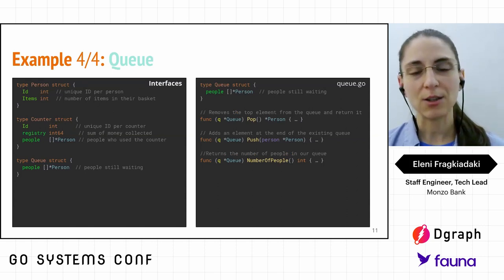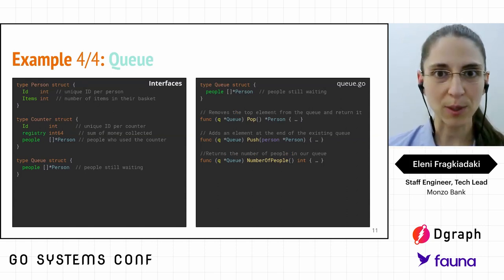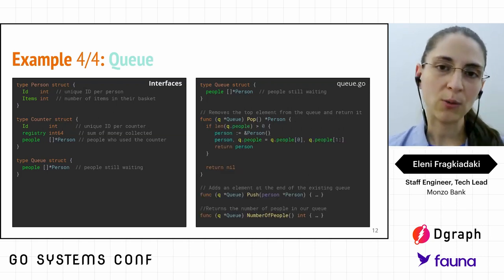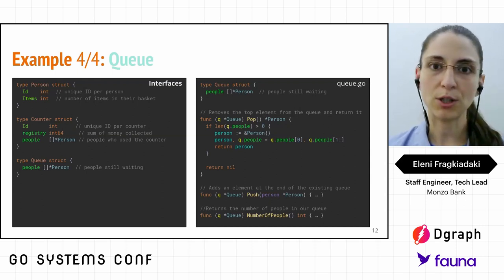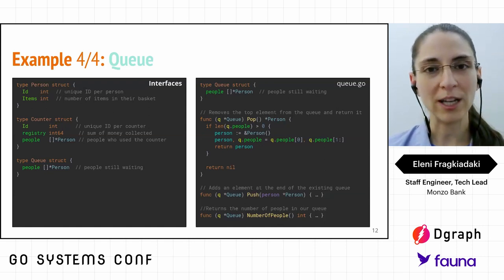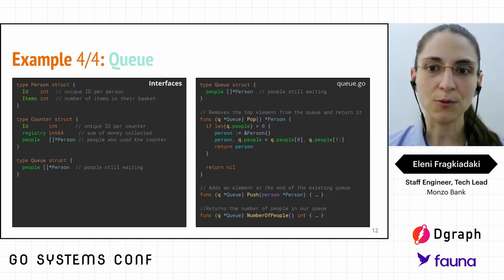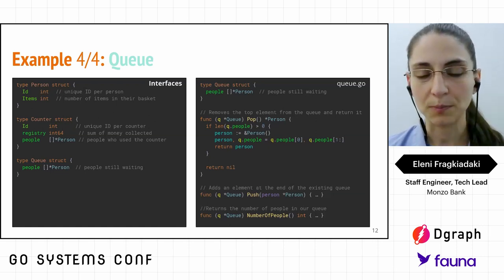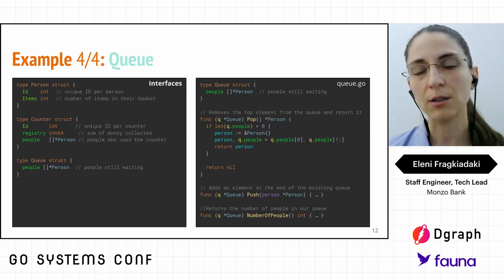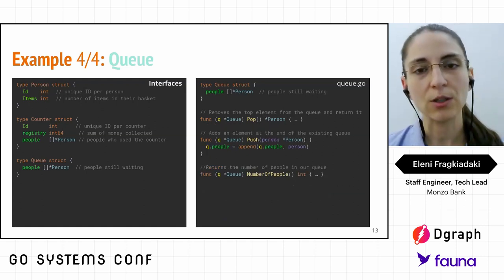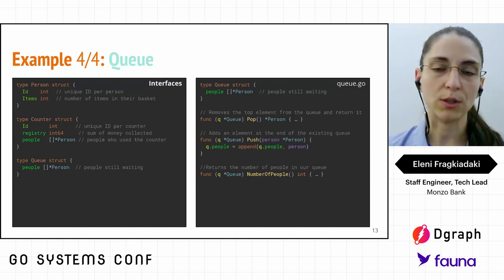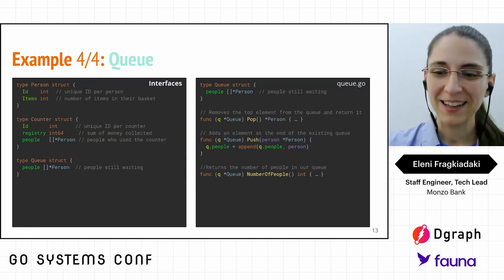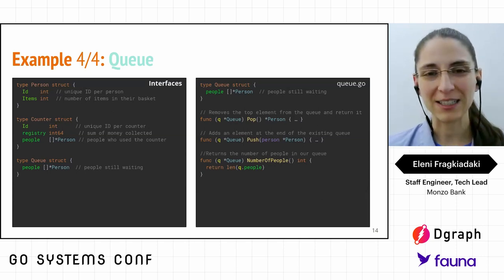The Queue has three functions: Pop, Push, and NumberOfPeople. Pop behaves first-in-first-out — it checks if there are people in the queue, extracts the first person, and returns a slice of the remaining people. If there are no people, it returns nil. Push simply performs an append operation to the queue. NumberOfPeople returns the length of the list of people in our queue.